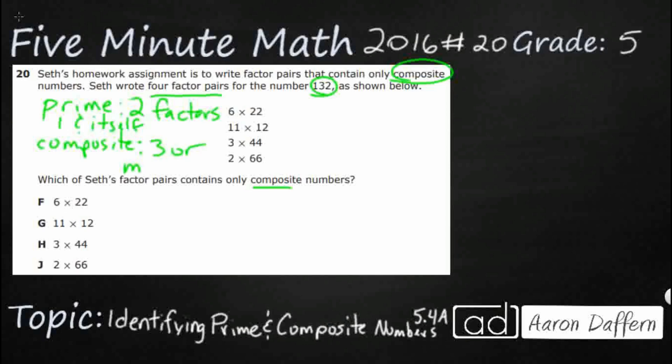Composite are three or more factors. So it could be three, it could be seven, you never know. So let's take a look at these numbers. They all come from 132. So let's just start a little prime factorization and I'm going to start with this first number pair right here, 6 and 22.